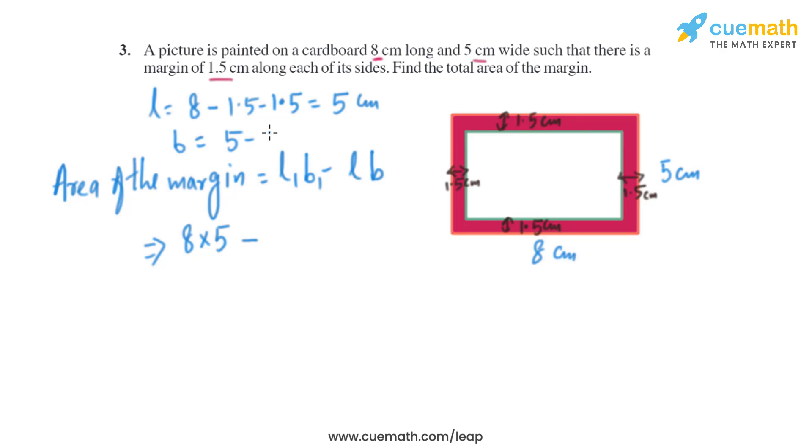Similarly we can find the breadth of the smaller rectangle - that is 5 minus 1.5 minus 1.5, which is 3, so basically it's 2 centimeter. So we know it is 8 into 5 minus 5 into 2, which is same as 40 minus 10, which is same as 30 square centimeter.